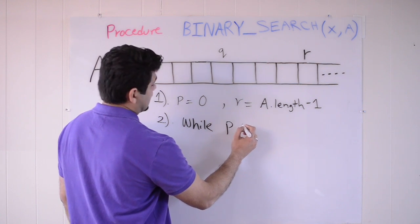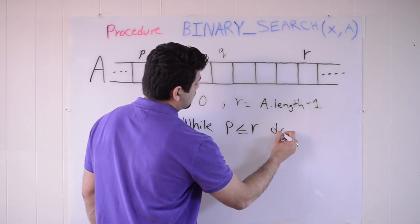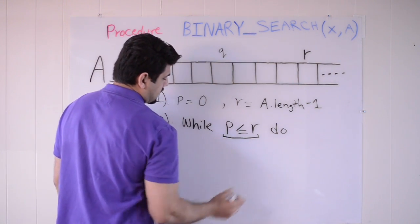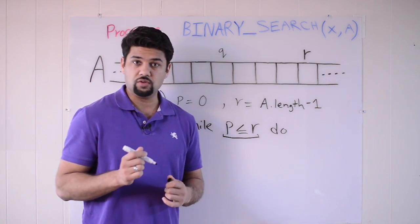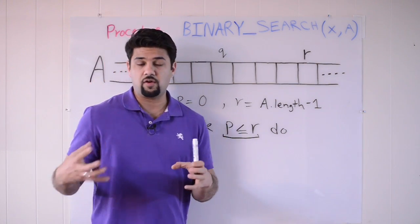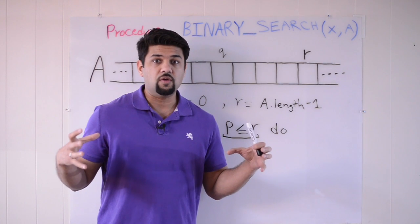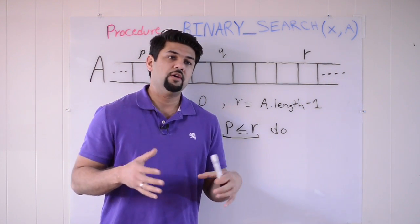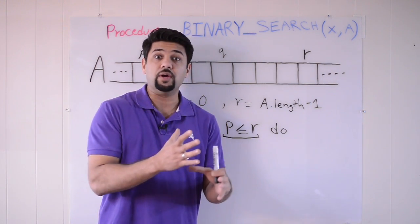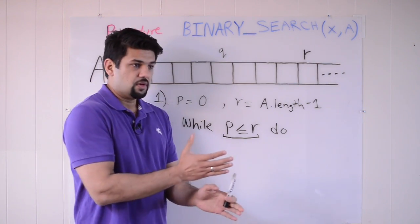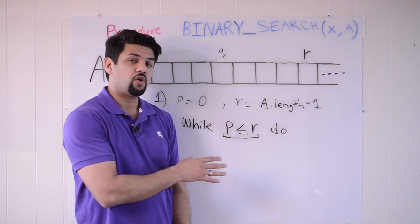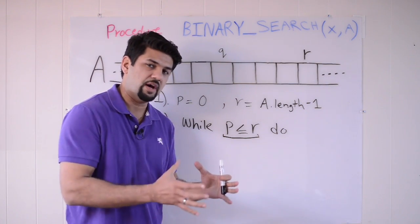So step number two is we can have a while loop. While p is less than or equal to r, we want to do something and I'll list those steps here. But what I want you to keep your focus on is this condition where p is less than or equal to r. What does this mean? Well, when we're searching through a range, of course, p is going to be the first slot and r is going to be the last slot. So, as it narrows down, there's going to be a point where if we can't find the given value in the array, r is going to try to cross over p as we're narrowing in.